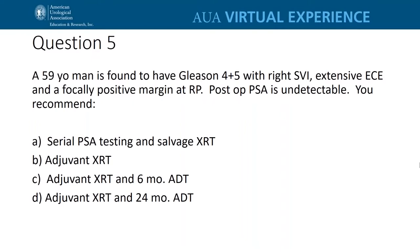Question number five: a 59-year-old man is found to have Gleason 4+5 with right seminal vesicle invasion, extensive extracapsular extension, and a focally positive margin at the time of radical prostatectomy. His post-operative PSA is undetectable. You recommend: A, serial PSA testing and salvage radiation therapy if warranted; B, adjuvant radiation therapy; C, adjuvant radiation therapy along with six months of androgen deprivation therapy; or D, adjuvant radiation therapy and two years of androgen deprivation therapy.